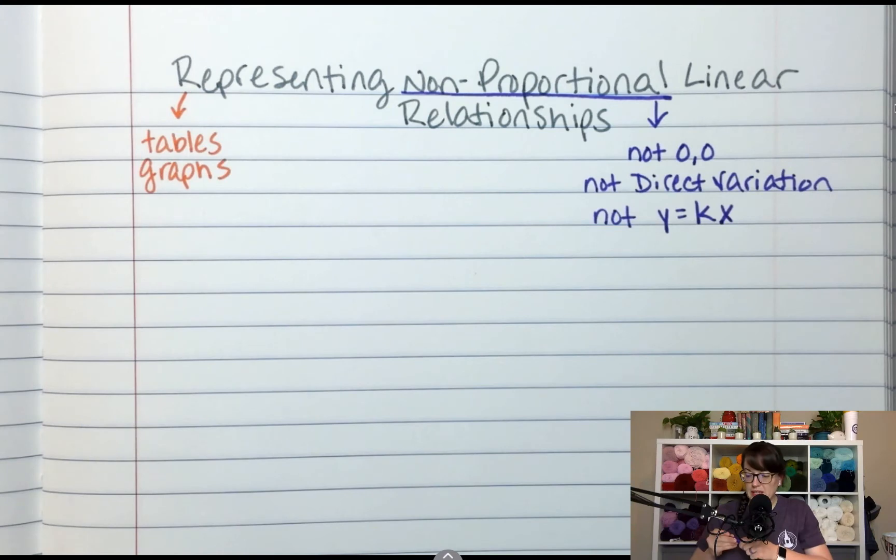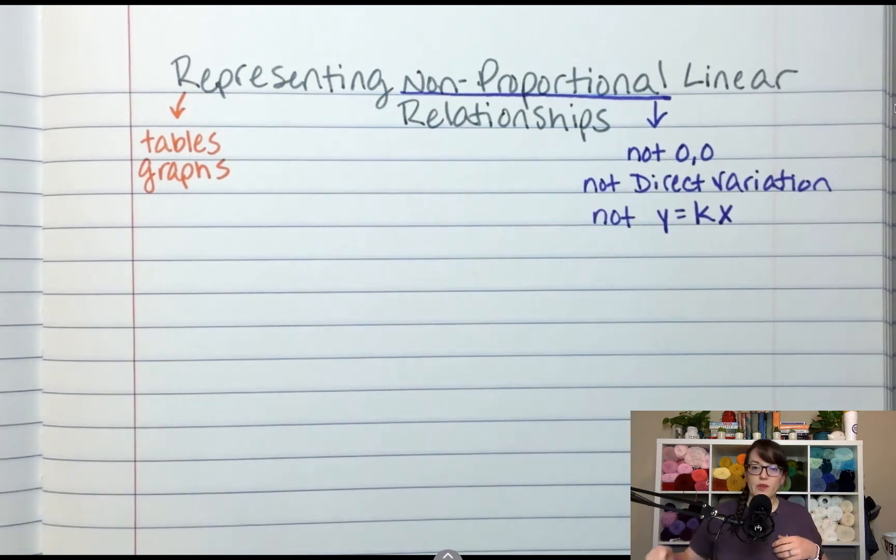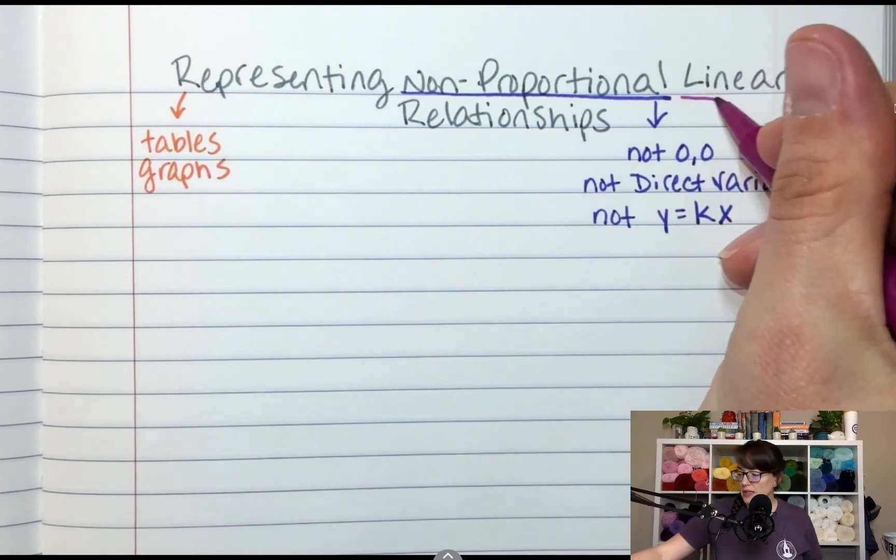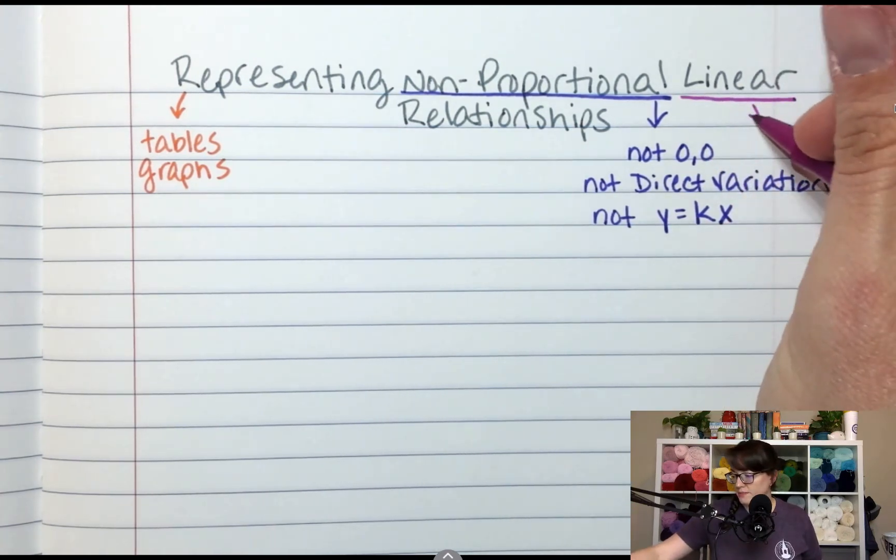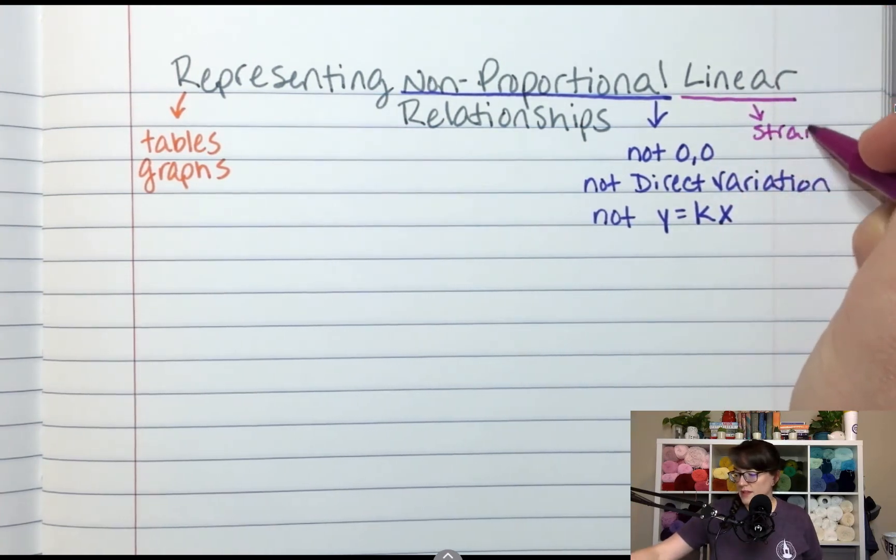Linear, linear means it's a straight line. So if I were to graph this situation, it's a straight line. So linear just means straight line. I've had several people ask me what linear means. It's a straight line.